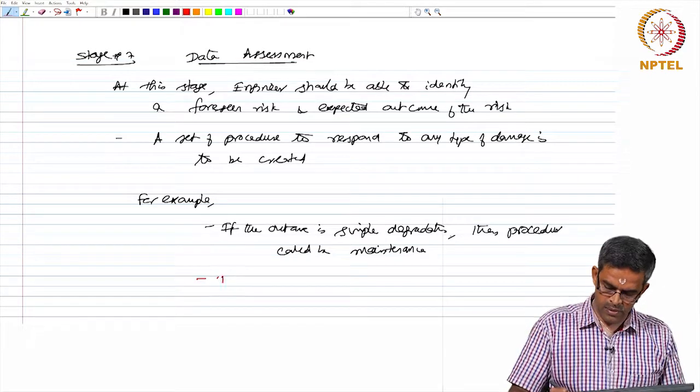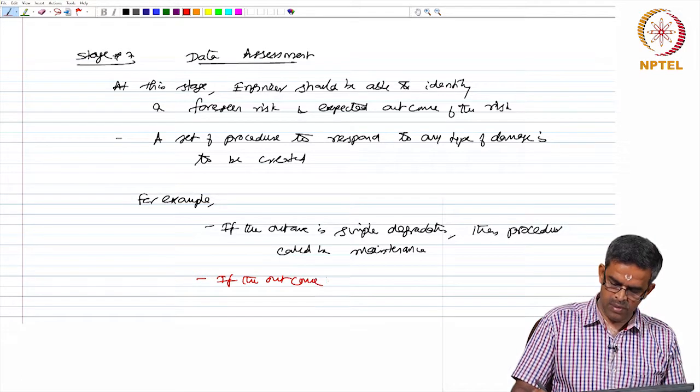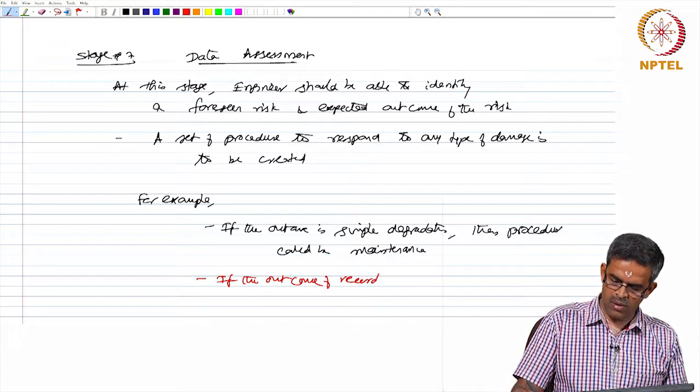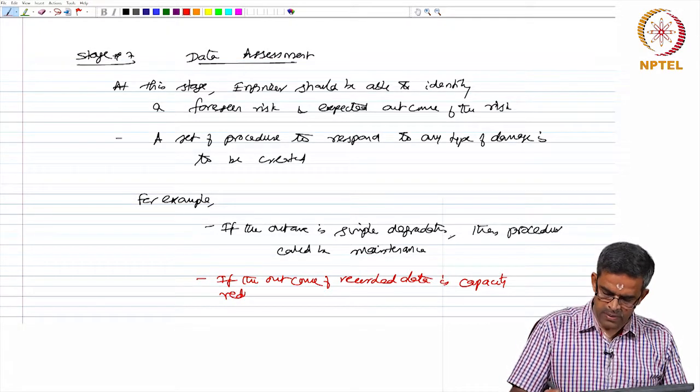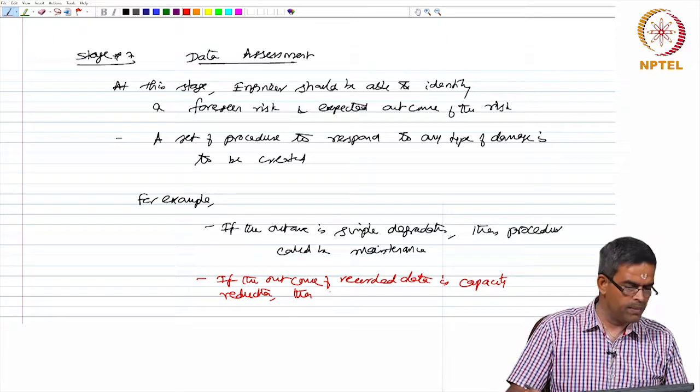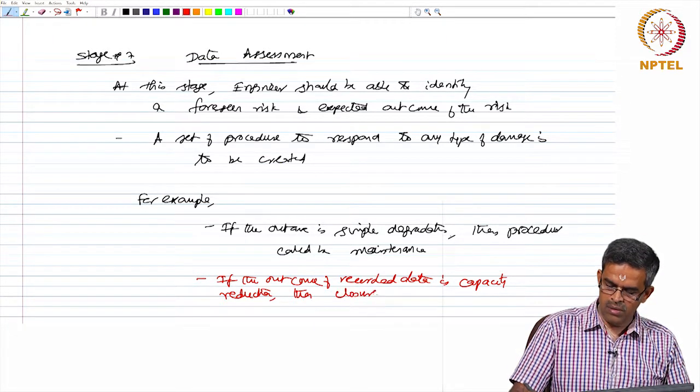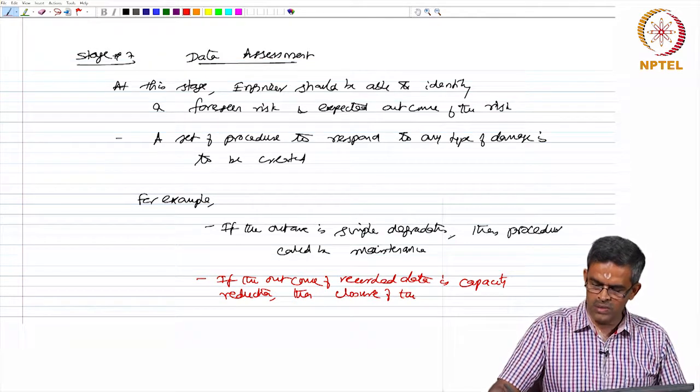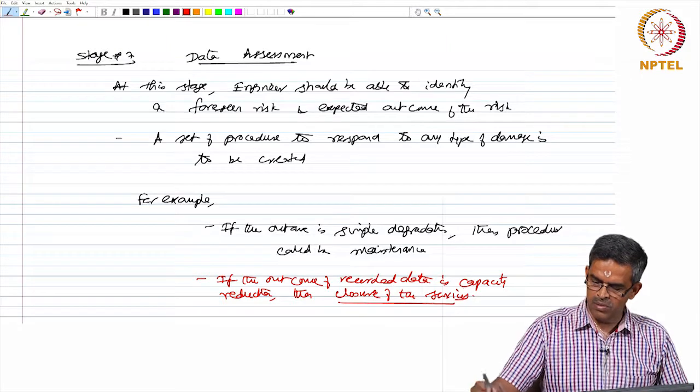If the outcome of recorded data is capacity reduction, then there should be closure of the services of the system, and analysis of the system should be recommended. So, friends,